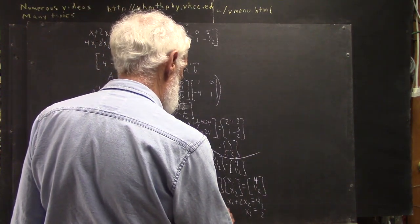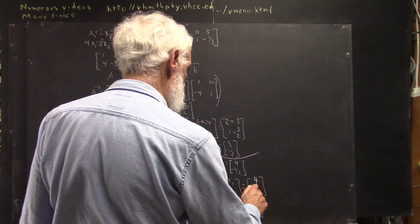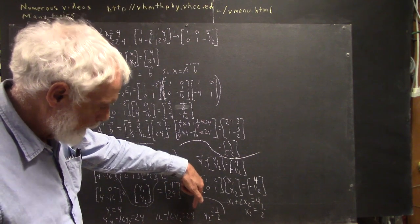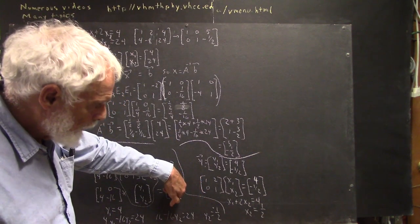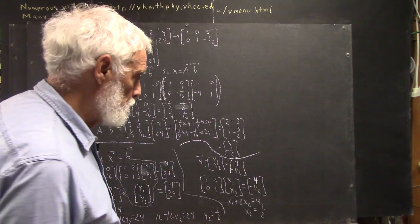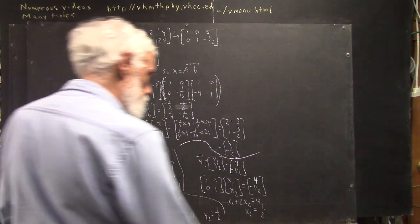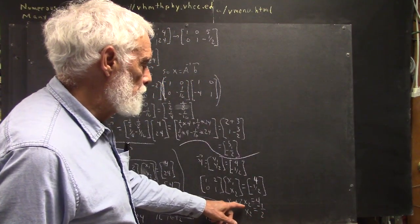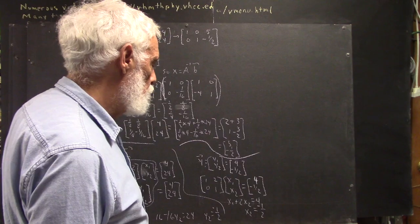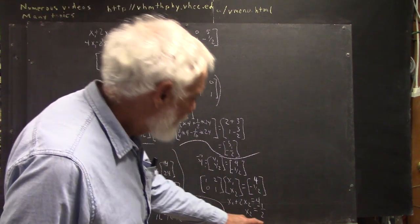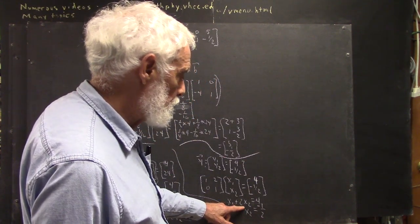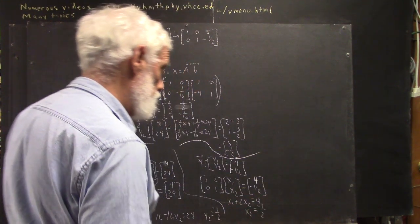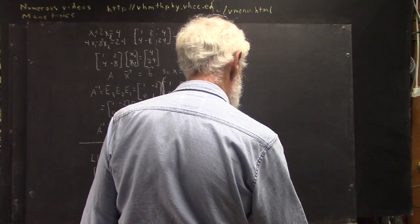I was careless with that solution. We don't get a negative 8 over here, we get a positive 8, which divided by negative 16 gave us negative 1 half. So X2 is negative 1 half, and X1 plus 2X2 equals 4. Well, X2 is negative 1 half, so 2X2 is negative 1. Negative 1 added to both sides leaves us X1 equals 5.